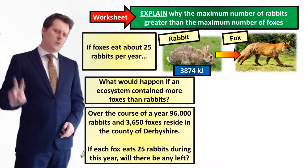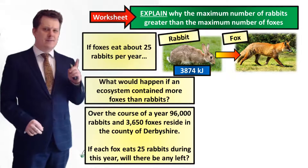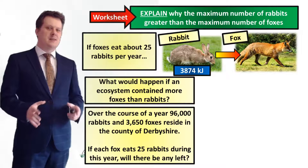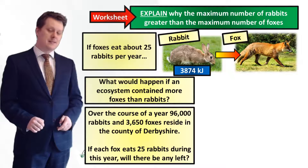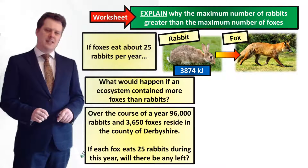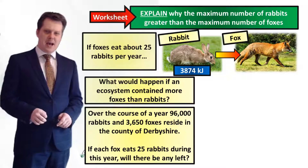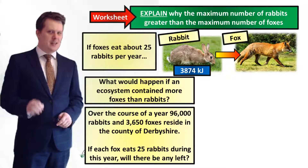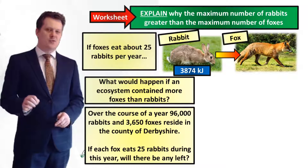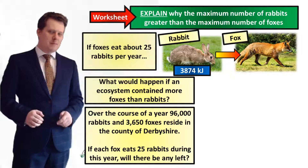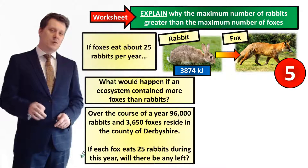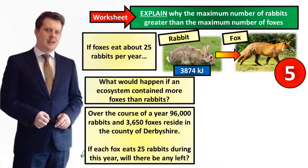Now we're going to look at the next two questions. If the foxes eat about 25 rabbits per year, what would happen if an ecosystem contained more foxes than rabbits? And for a challenge: over the course of a year, 96,000 rabbits and 3,650 foxes live in the county of Derbyshire — if each fox eats 25 rabbits during this year, will there be any rabbits left? Pause the video if you need more time.